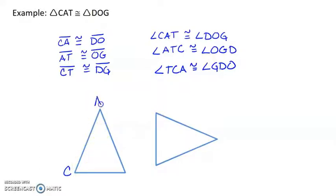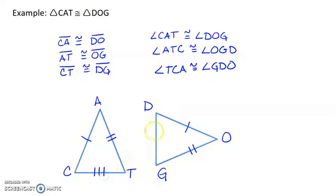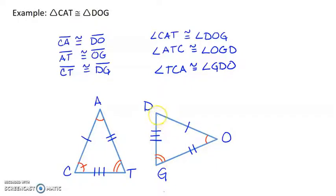We also have the correspondence of the angles: angle CAT is congruent to angle DOG, angle ATC is congruent to angle OGD, and angle TCA is congruent to angle GDO. On the triangles themselves, if I label this CAT — with the triangle rotated 90 degrees — the corresponding triangle is DOG, giving us CA congruent to DO, AT congruent to OG, and CT congruent to DG.